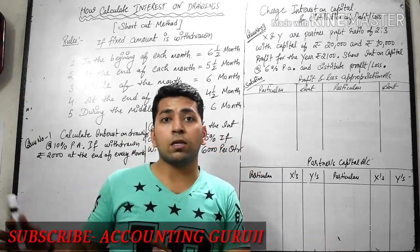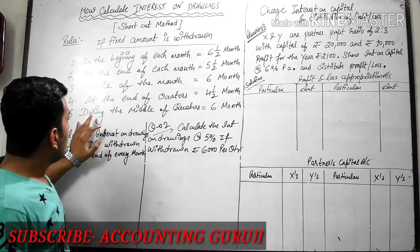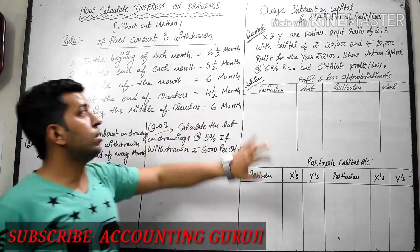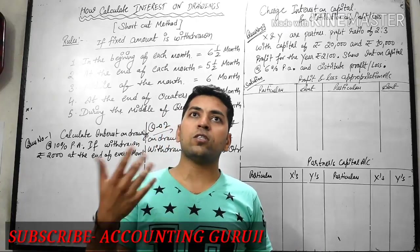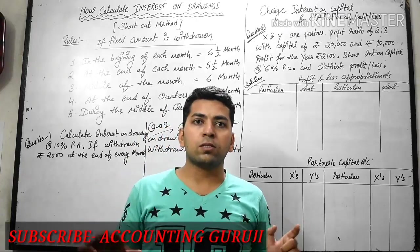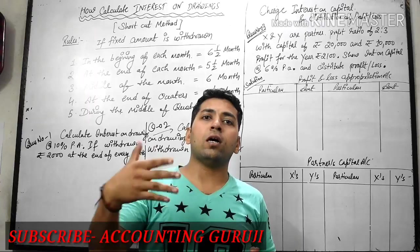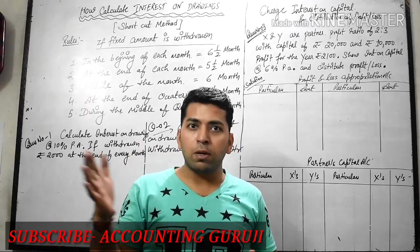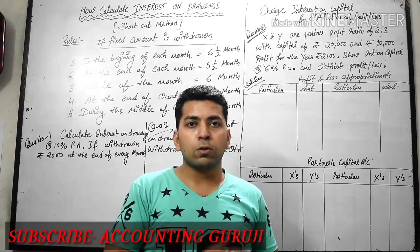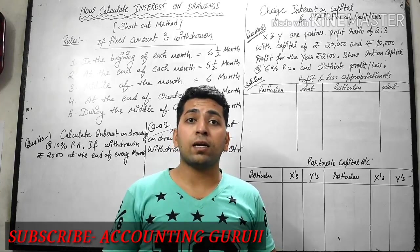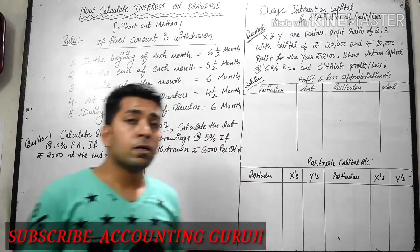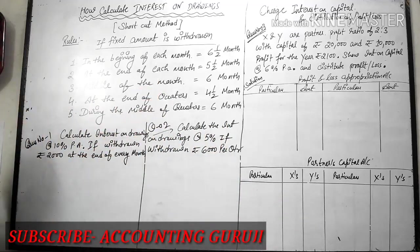For a year there are 4 quarters, in the middle of quarter 6 months. This is the charge when someone withdraws. Suppose if a partner withdraws 2,000 rupees every month, 12 months into 2,000 equals 24,000 rupees annually. So the interest is that much we can calculate. So guys, we have a question.